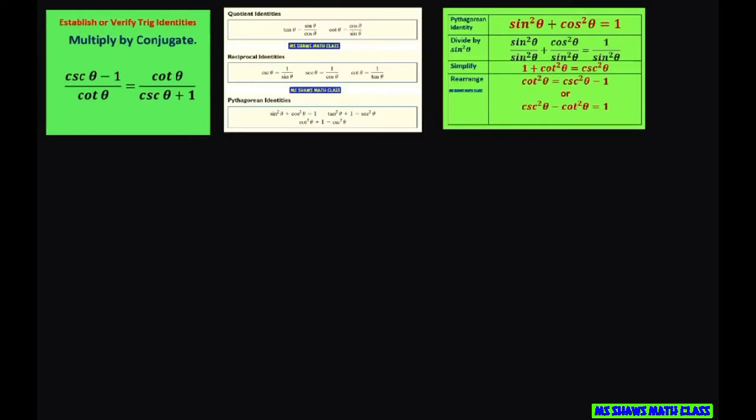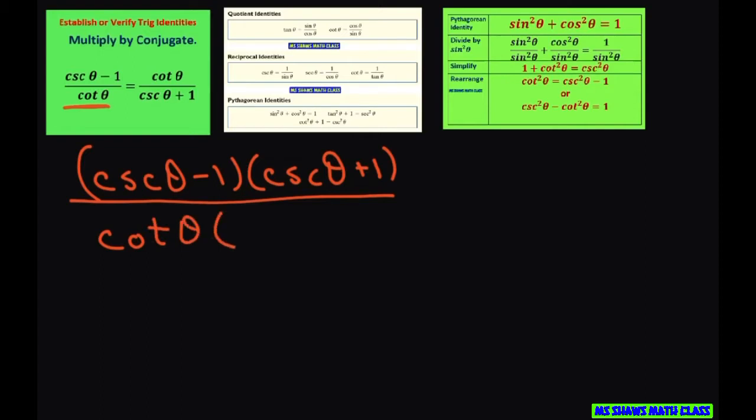So if we work on the, it doesn't matter which side you start with, let's just start on the left. So you take your cosecant theta minus 1 and multiply by its conjugate which is cosecant theta plus 1. And you also have to multiply your denominator by this as well. This is cosecant theta plus 1.